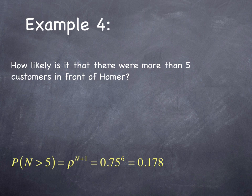Now, you want to know how many people Homer is waiting behind. What is the likelihood that there were more than five customers in front of Homer? The probability that n is greater than 5 equals rho to the n plus 1. N is 5, n plus 1 is 6, 0.75 to the 6 is 0.178, or 17.8% of the time there's more than five people in front of Homer.